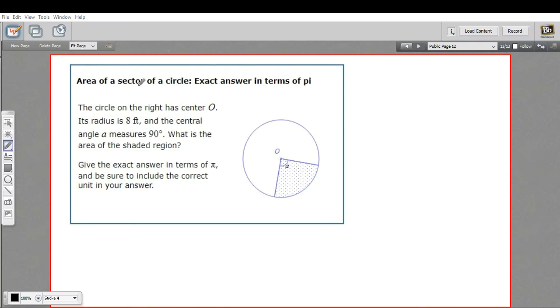In this problem, we're being asked to find the area of a sector of a circle, and a sector is like a slice of pie. We measure those sectors based on the angle here, the central angle. So the bigger the central angle, the bigger the slice of pie.